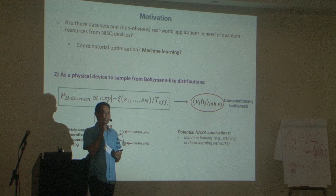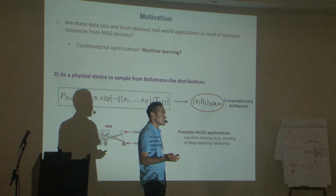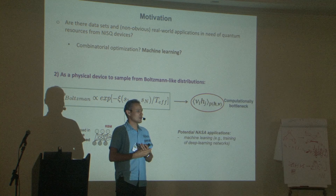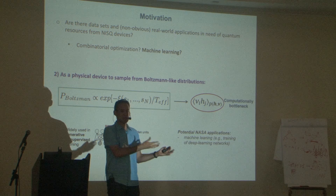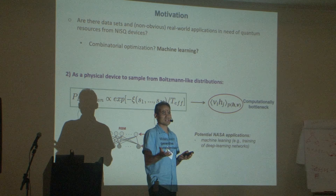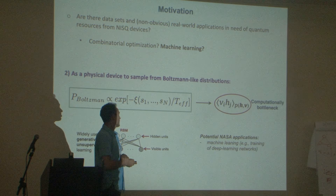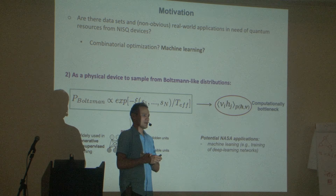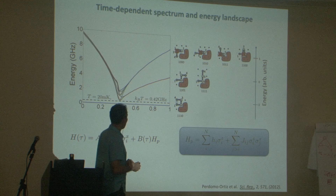Nobody actually caught me this morning asking: if we're using the adiabatic theorem of quantum mechanics—using quantum devices to find the ground state of Hamiltonians, so the probability of observing the ground state is close to one—how can we also be sampling from a Boltzmann distribution? What exactly are we doing? The answer is: actually you can do both. The motivation for quantum annealing is the adiabatic theorem, but in reality, in these devices, what happens is something different.